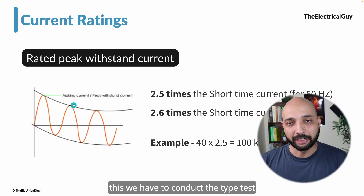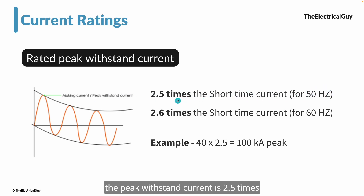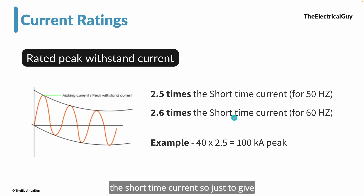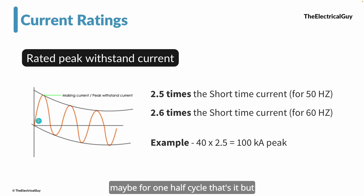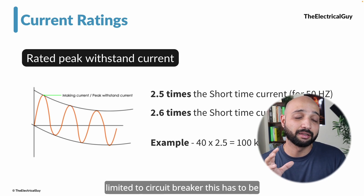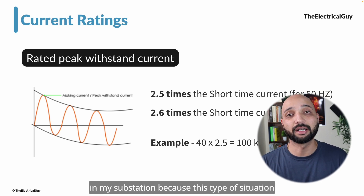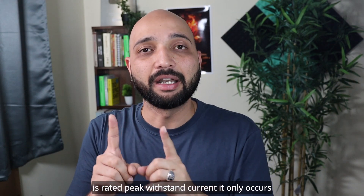To prove this, type tests must be conducted on the switchgear. Based on industry experience, IEC states that this current does not go beyond a certain limit. If the system operates at 50 Hz, the peak withstand current is 2.5 times the rated short time current. If it is 60 Hz, it is 2.6 times. For example, if the short time current is 40 kilo ampere, then the peak withstand current would be 100 kilo ampere. The switchgear should be able to carry this for a limited time — not specified by IEC because it is very short, perhaps only one half cycle. This rating is not limited to circuit breakers; all switchgear and devices connected in the substation must meet this requirement.